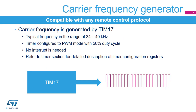Timer 17 generates the carrier frequency for the remote protocol used in the application. The carrier frequency can be configured to any frequency needed by the chosen protocol, including typical frequencies in the range of 34 to 40 kHz. This is done by configuring timer 17 into PWM mode with a 50% duty cycle. Once the timer is started, it does not require additional software control, including interrupts. For a detailed description on how to configure timer 17, please refer to the timer section in the reference manual.